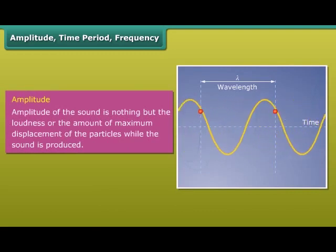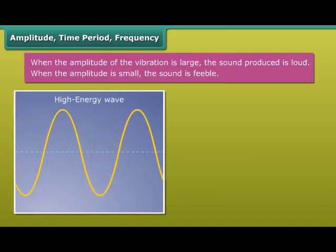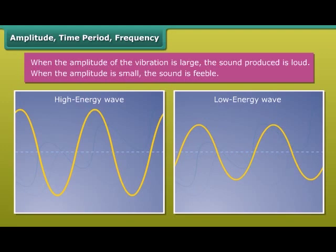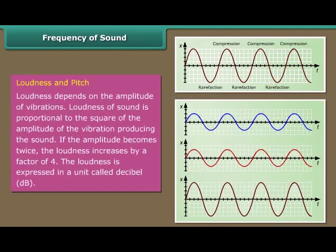Amplitude of sound is the loudness or the amount of maximum displacement of the particles while the sound is produced. When the amplitude of the vibration is large, the sound produced is loud. When the amplitude is small, the sound is feeble. The number of oscillations per second is called the frequency of the oscillation, expressed in hertz. Loudness depends on the amplitude of vibrations. Loudness of sound is proportional to the square of the amplitude of the vibration. If the amplitude becomes twice, the loudness increases by a factor of four. Loudness is expressed in a unit called decibel (dB).